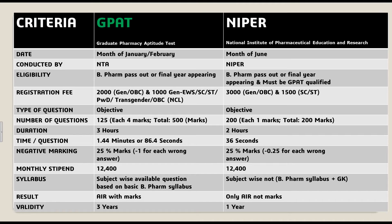The duration of the GPAT exam is 3 hours, and the duration of the NIPER exam is 2 hours. You will get 1.44 minutes, or 86.4 seconds, for answering each question in the GPAT exam. In NIPER, you will get only 36 seconds to answer each question.